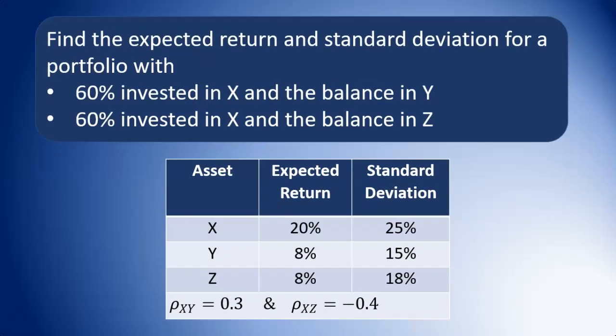So let's take it to an exercise. We need the expected return and standard deviation for a portfolio with 60% invested in X and the balance in Y, and also for one with 60% invested in X and the balance in Z. The balance is 40%, since that takes us up to 100%. Asset X has a 20% expected return and a 25% standard deviation. Asset Y has an 8% expected return and a 15% standard deviation, while asset Z has an 8% expected return and an 18% standard deviation. The correlation coefficient between X and Y is 0.3, and between X and Z is negative 0.4.